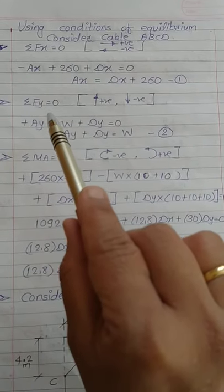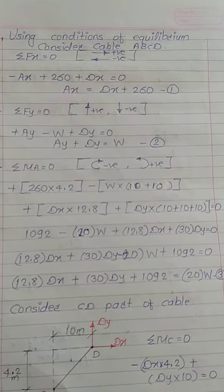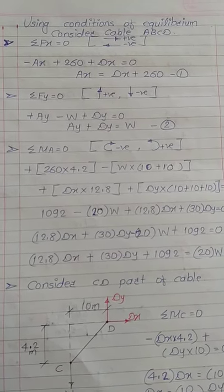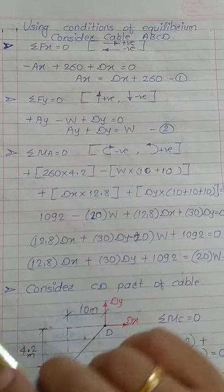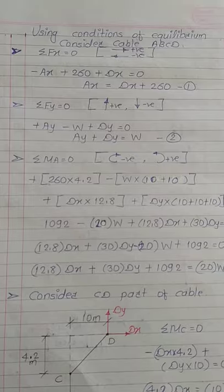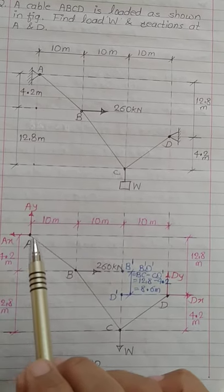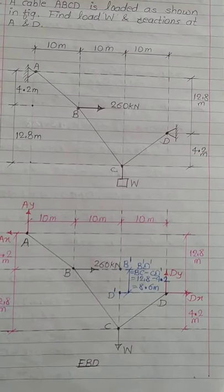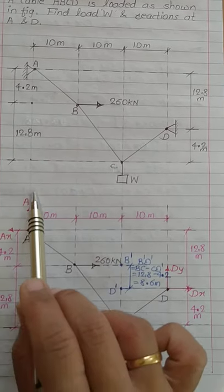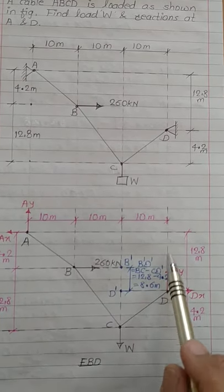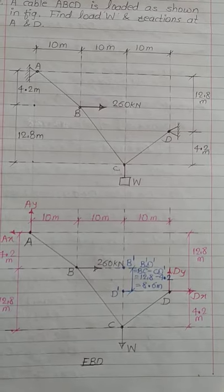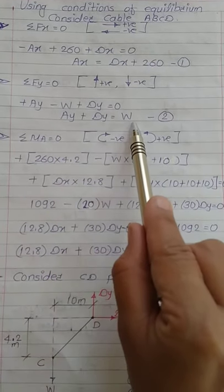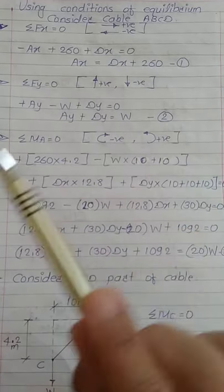The second equilibrium condition is ΣFy = 0, using the sign convention of upward forces positive and downward forces negative. From the free body diagram, the vertical forces are AY, W, and DY. The equation becomes: +AY − W + DY = 0, which gives AY + DY = W. This is Equation 2.